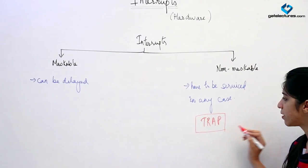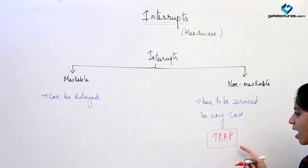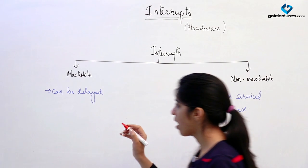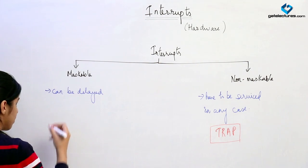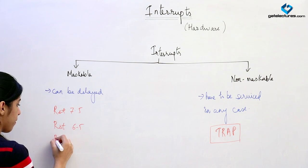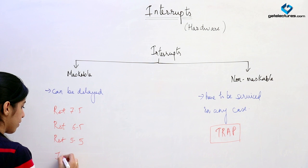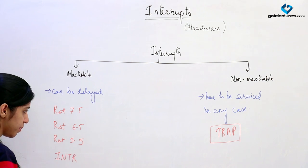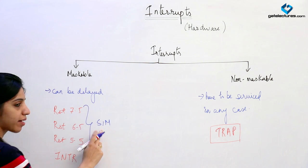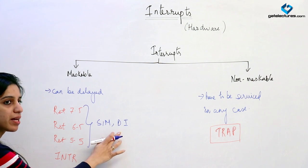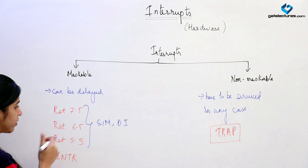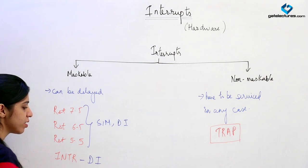Trap is a non-maskable interrupt. If the trap pin is made high, it has to be serviced and the ISR of trap has to be executed — this cannot be masked. Other interrupts, which are RST 7.5, RST 6.5, and RST 5.5, can all be masked using some instructions — SIM (set interrupt mask) and DI (disable interrupt). INTR can be masked using DI.